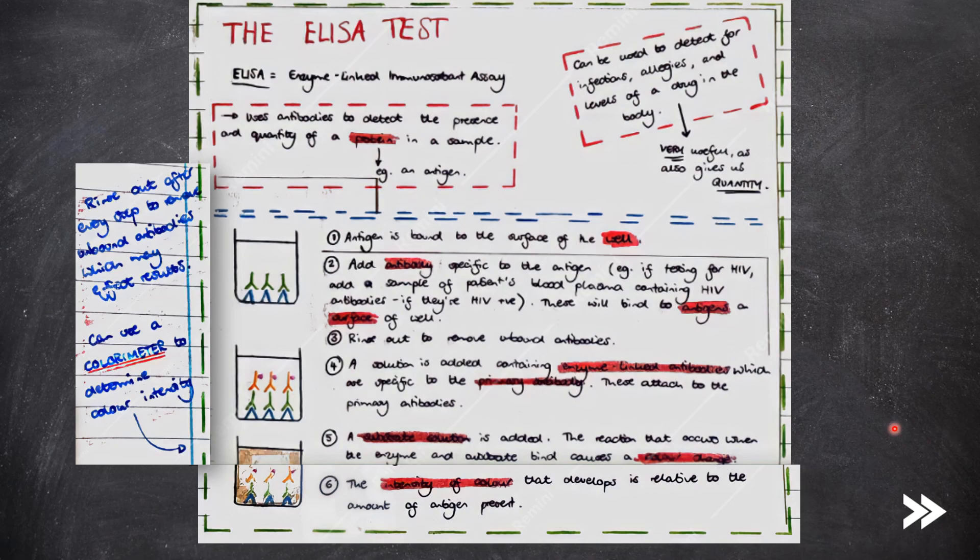Then, a substrate solution is added, containing the substrate to the enzyme on the antibody. The reaction catalyzed by the enzyme causes a colour change. We can use a colourimeter to measure the colour intensity, and the intensity measured will be relative to the amount of antigen present.